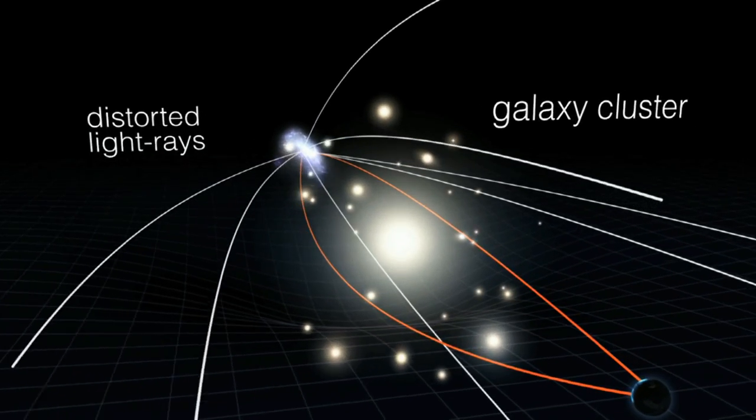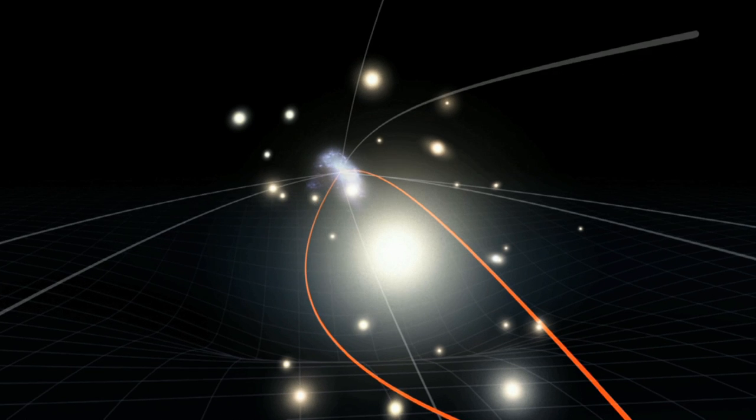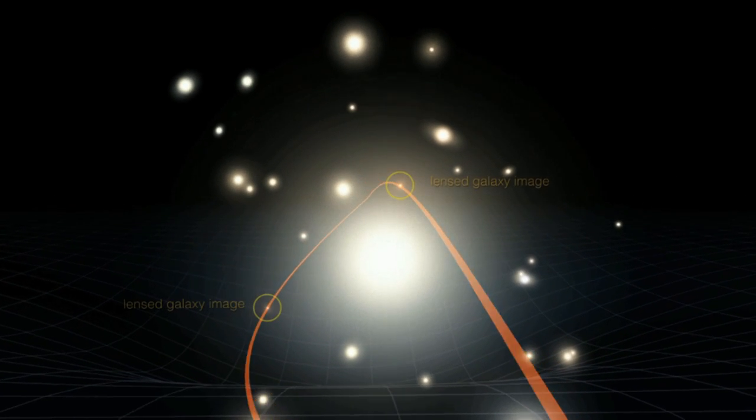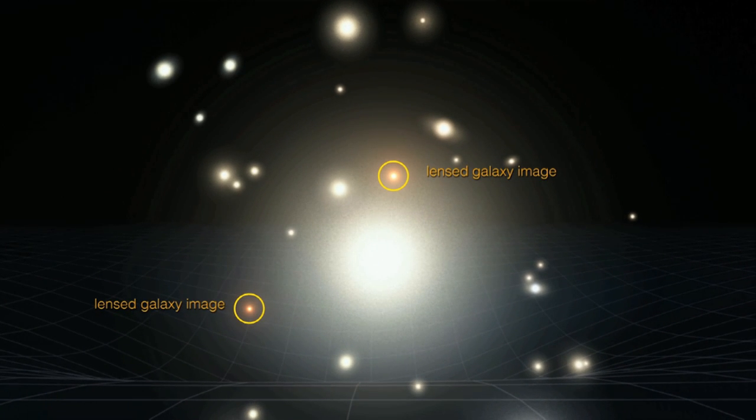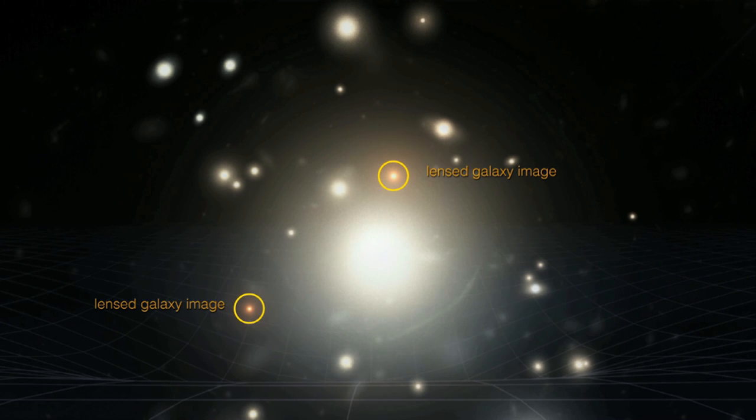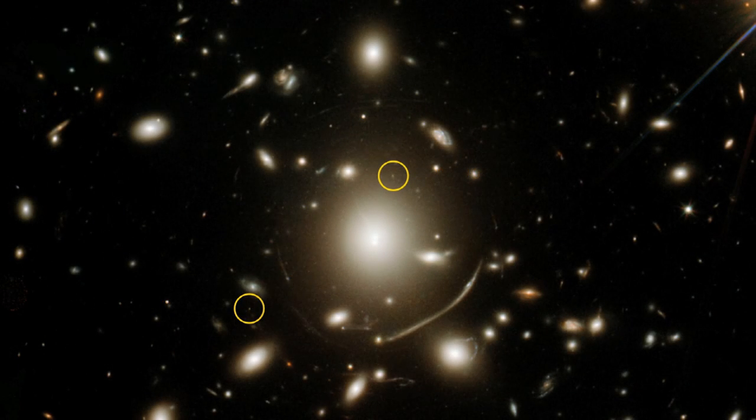As a result, the object, or rather the curved space around it produced by its gravity, acts like a lens, a gravitational lens that deflects light into our telescopes that would have otherwise never made it there.